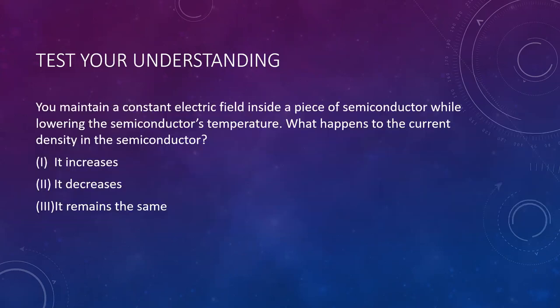Test your understanding: if you maintain a constant electric field inside a semiconductor while lowering its temperature, what happens to the current density? The answer is that it decreases, because the resistivity of the semiconductor increases at lower temperatures. We've now discussed current, current density, and the material properties of resistivity and conductivity that affect current flow.